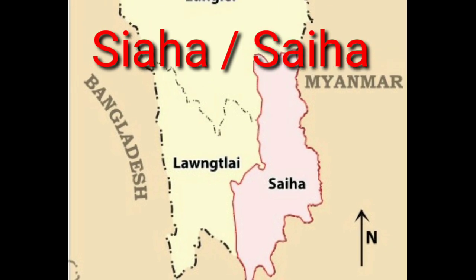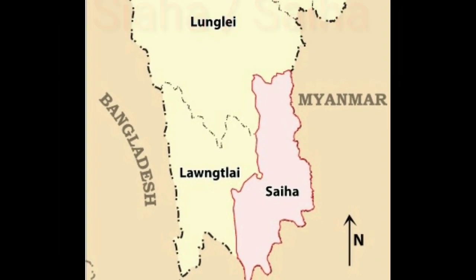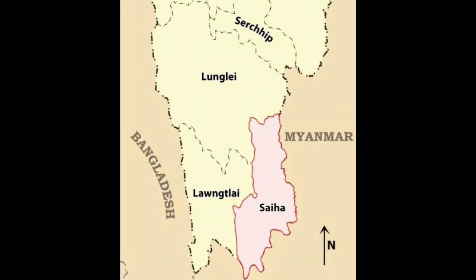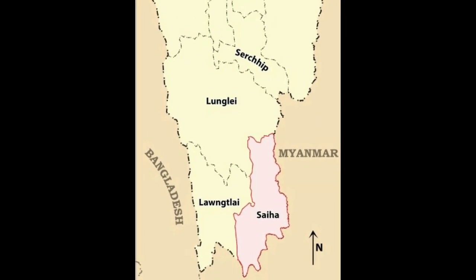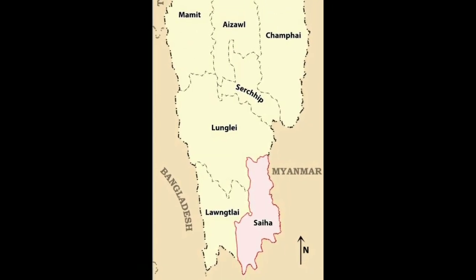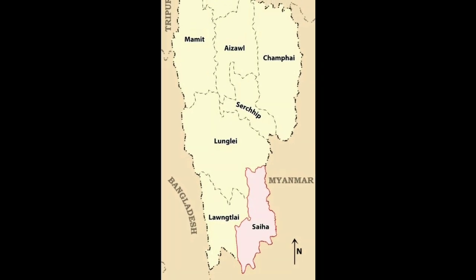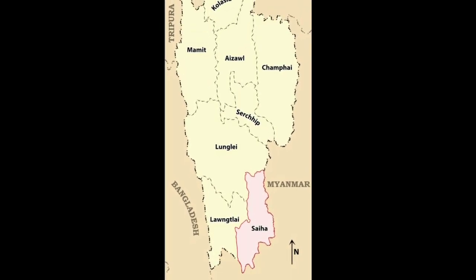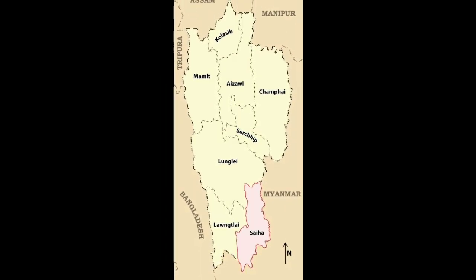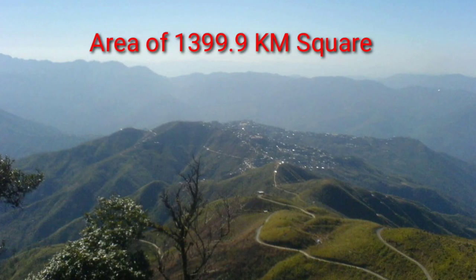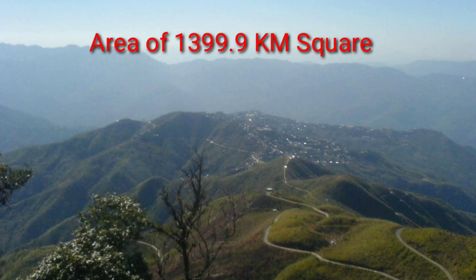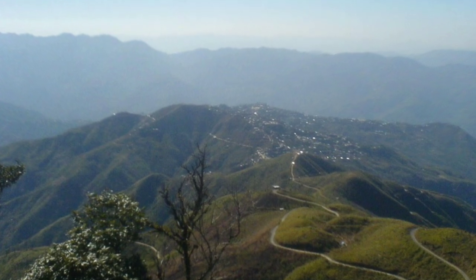Siaha District, also known as Saiha District, is one of the 11 districts of Mizoram State in India. The district is bounded on the northwest by Lunglei District, on the north and west by Lungtlai District, and on the south and east by Myanmar. The district occupies an area of 1,399.9 km².